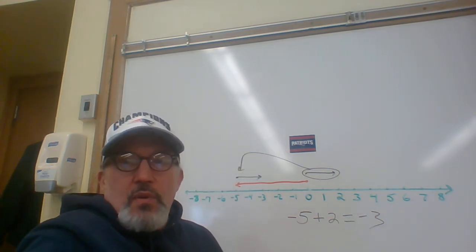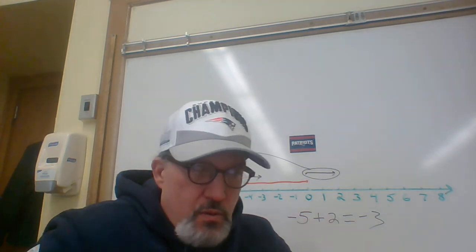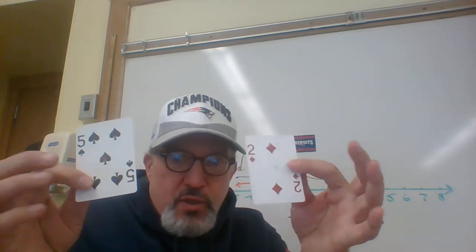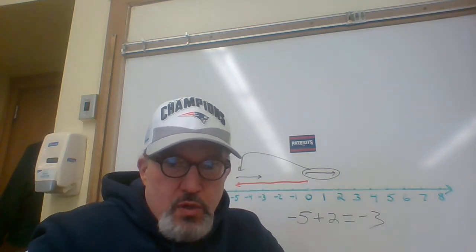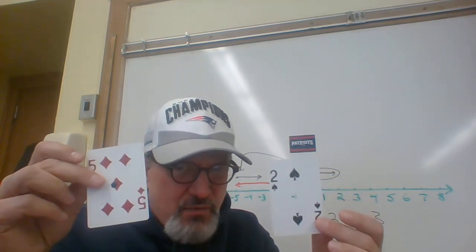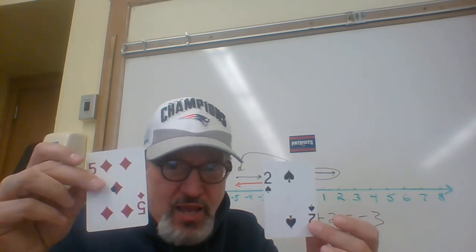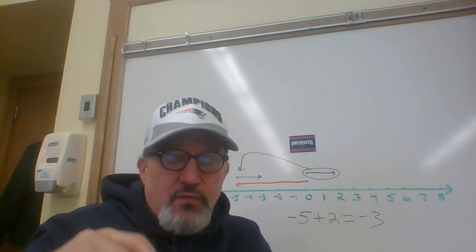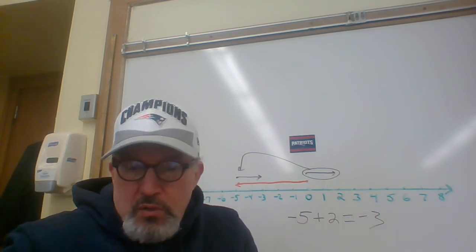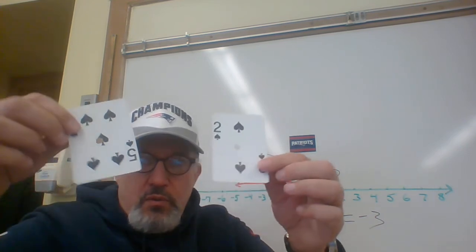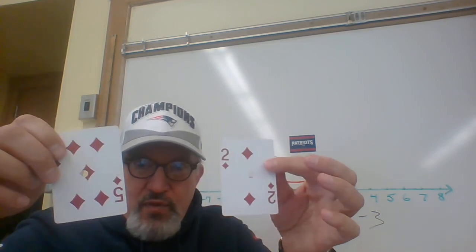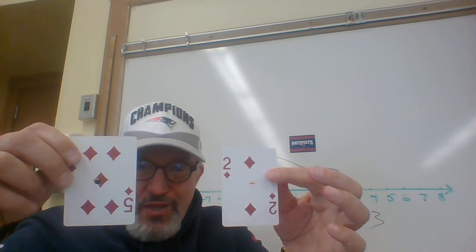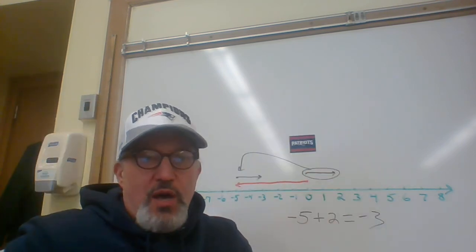Now notice something. When we did five plus negative two it was three. When we do negative five plus two it's negative three. Is that just a coincidence? Absolutely not. The two answers are opposites of each other just as they were with the first two. When we add five and two to get seven and then we add negative five and negative two to get negative seven. Those answers are also opposites.